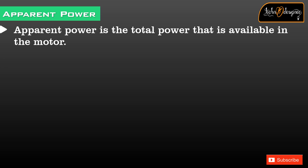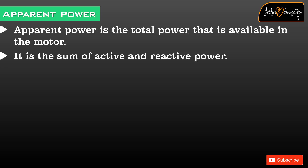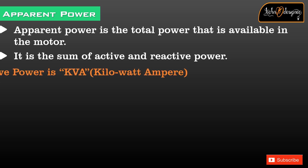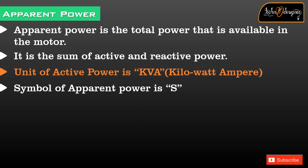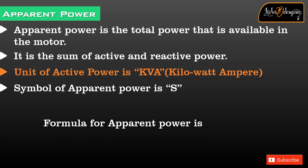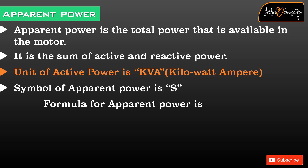Apparent power is the total power available in the motor and is the sum of active and reactive power. The unit of apparent power is kVA (kilovolt ampere), and the symbol is S. The formula for apparent power is S² = P² + Q².